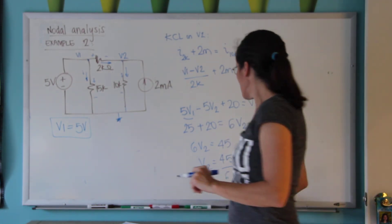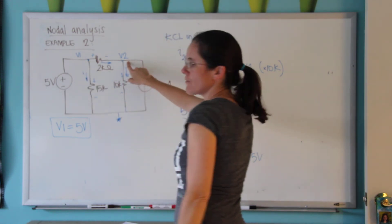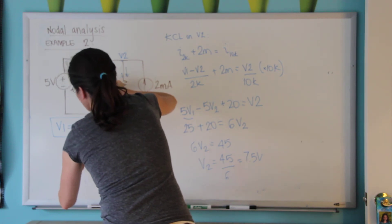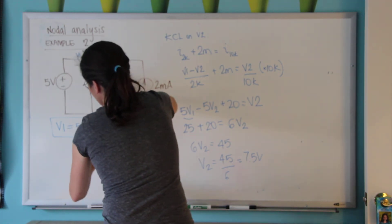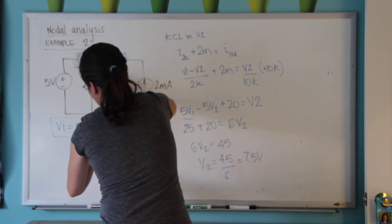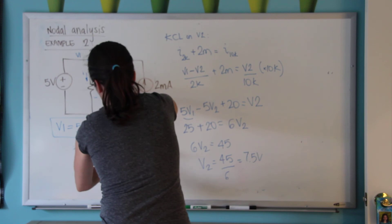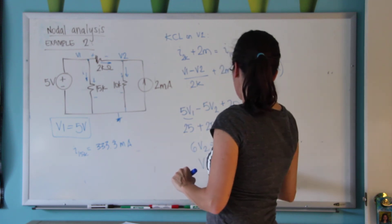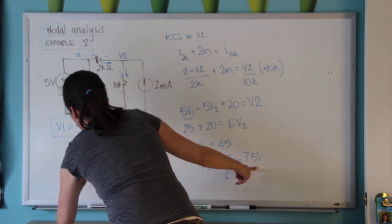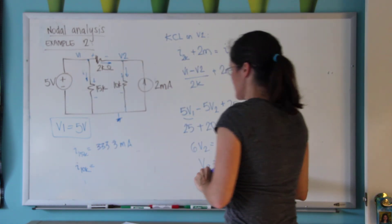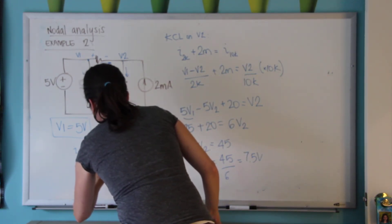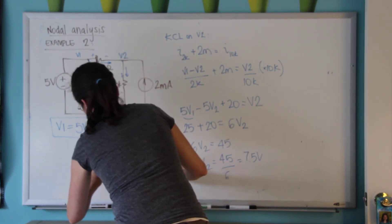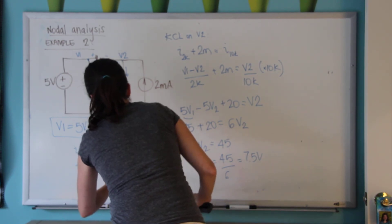Very easily I found these two main node voltages. If I wanted the currents, I can find the current on the 15 kΩ, which is 333 mA. The voltage on the 10 kΩ is 7.5 volts, so the current there is 7.5 divided by 10k, which is 0.75 mA.